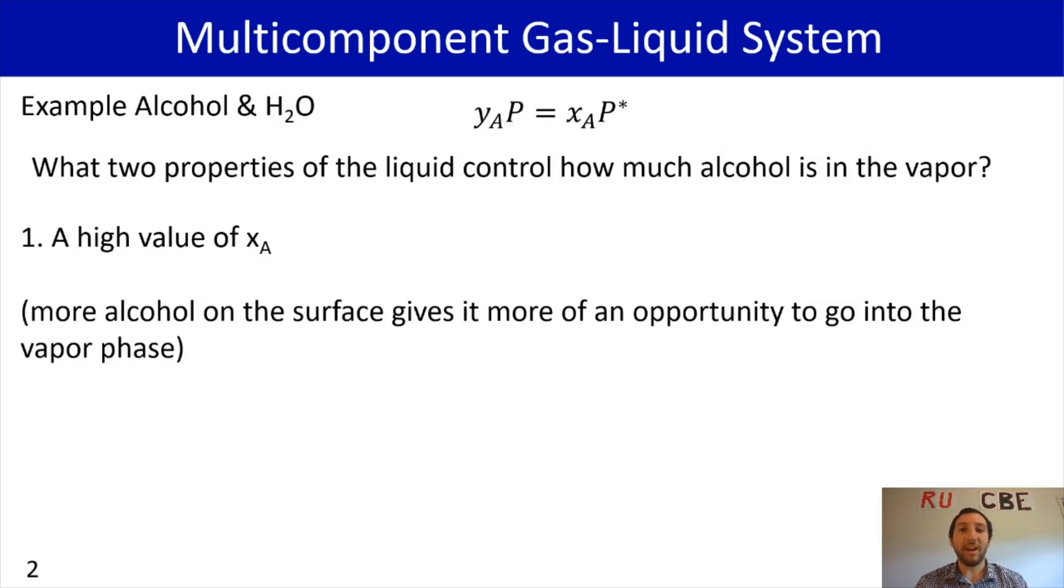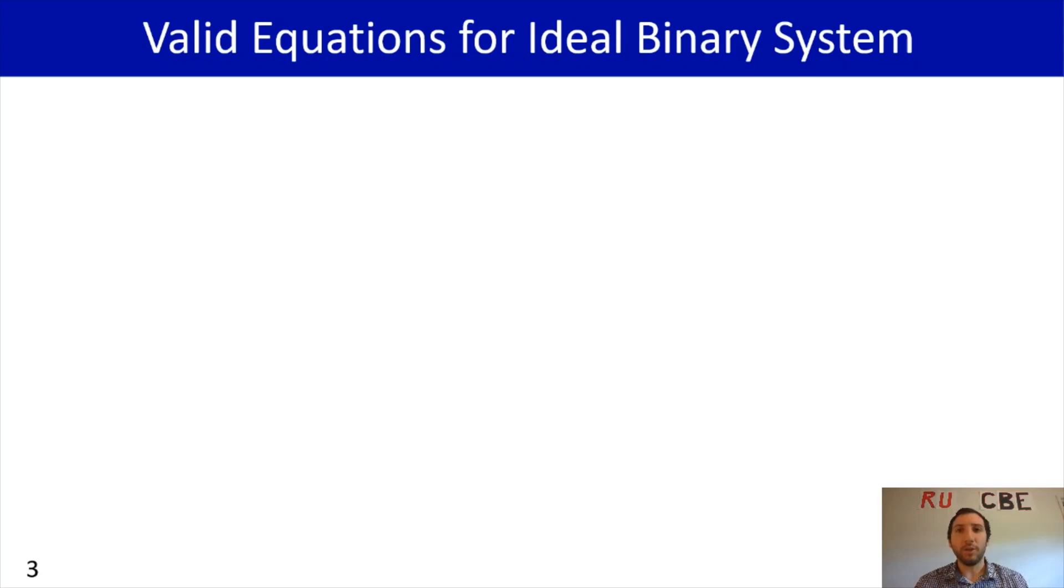And the other way to increase the amount of alcohol in the vapor phase is by having a higher value of P star. So you have a higher escape tendency, which you can do by increasing your temperature. Now, when you work with a binary system, there's a couple of equations that you'll want to keep in mind. So as a reminder, we have Raoult's law, where the partial pressure of A equals x_A P_A star, the mole fraction of A in the liquid times P_A star, the vapor pressure of A. And you also have Dalton's law, where you have the partial pressure of A equals the mole fraction of A times the total pressure. And again, you can do this for component A and you can do this for component B. And when we do this, we make these assumptions that we have an ideal gas and we have an ideal liquid, where an ideal liquid assumes that there's no intermolecular interactions.